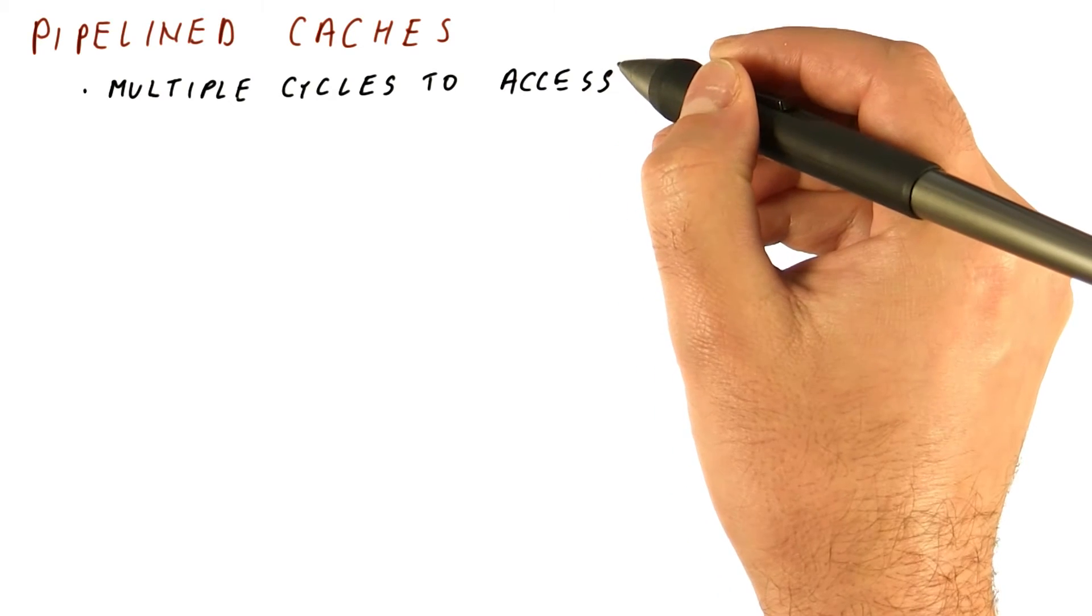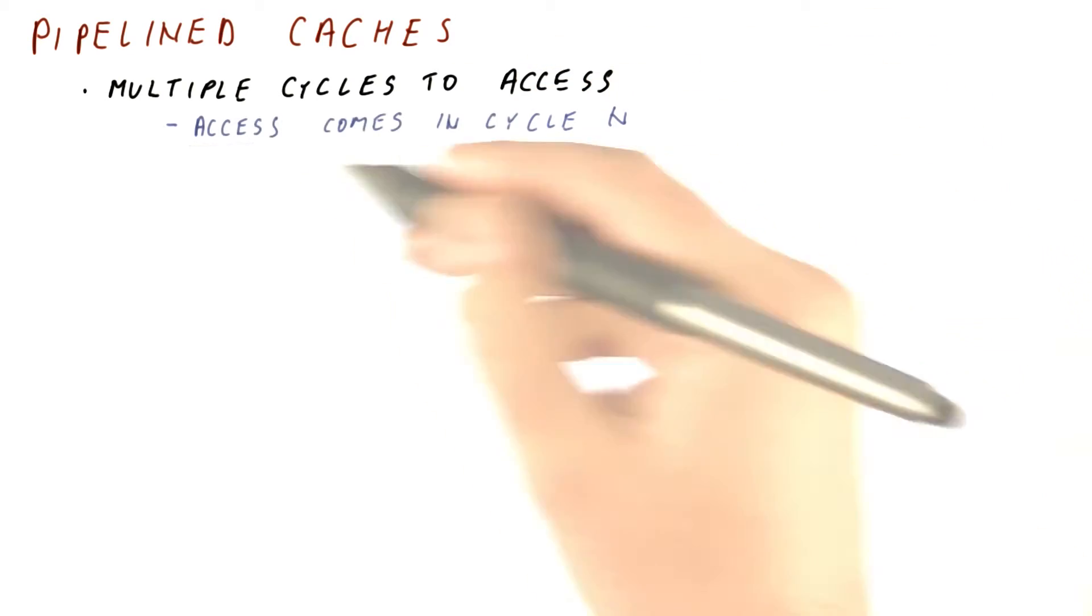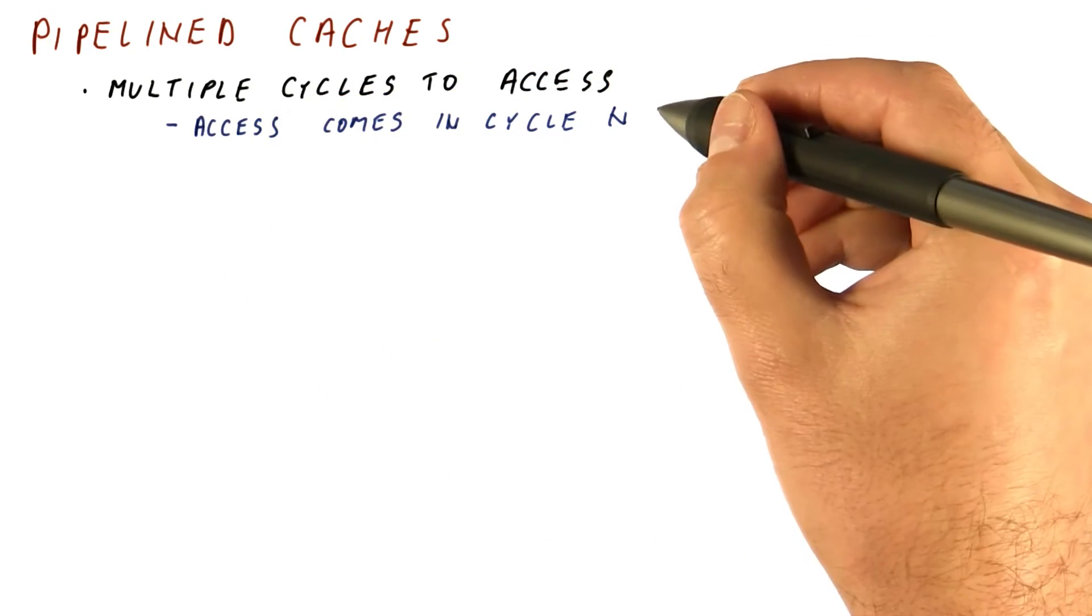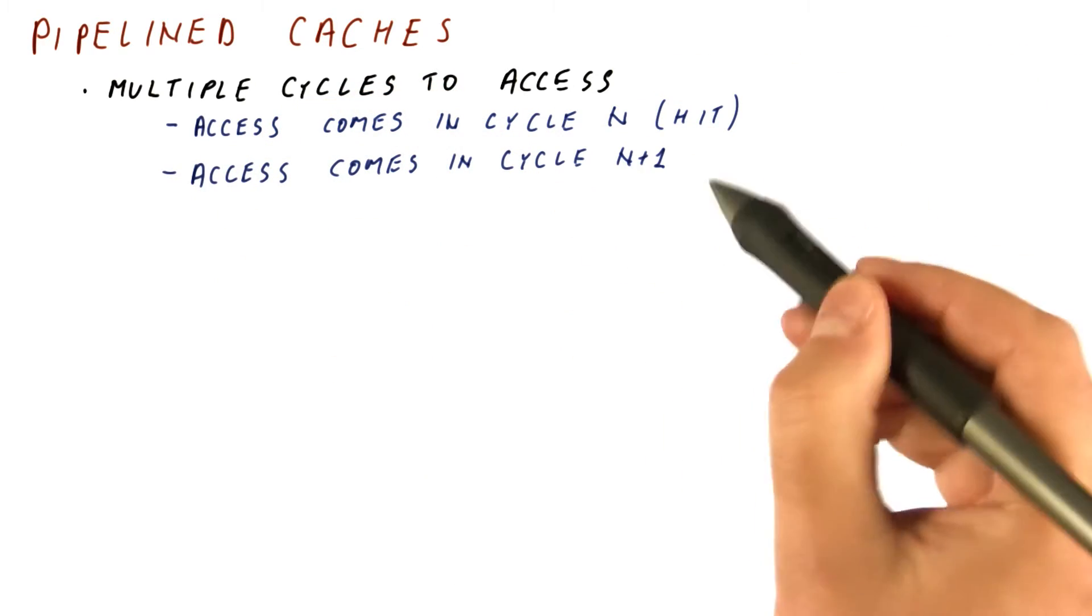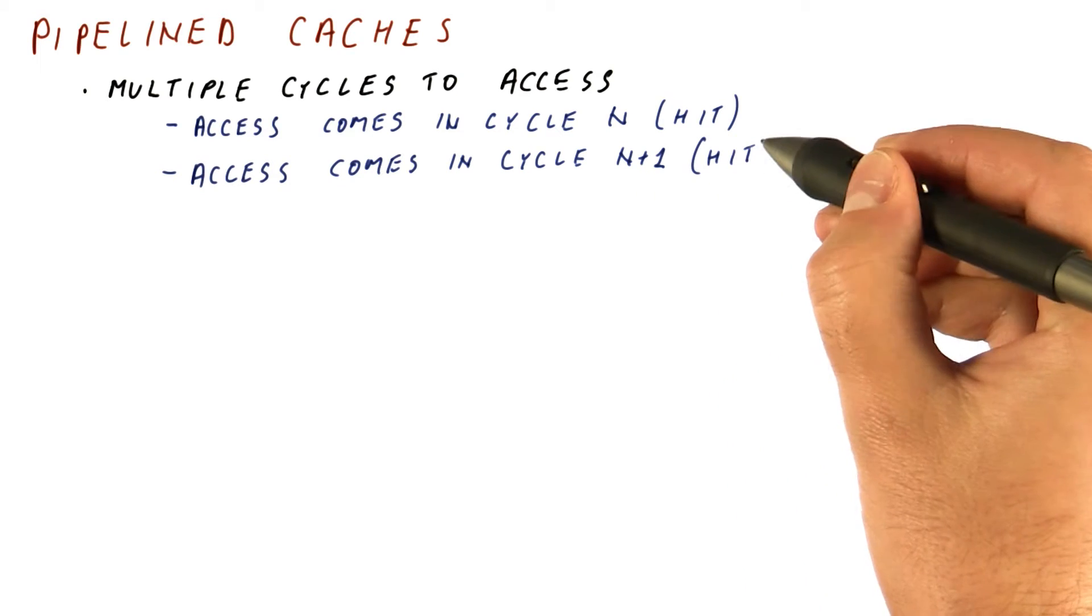If the cache takes multiple cycles to access, we can have a situation where an access comes in cycle n, and it's a hit. And if another access comes in cycle n plus 1, and it would be a hit too,